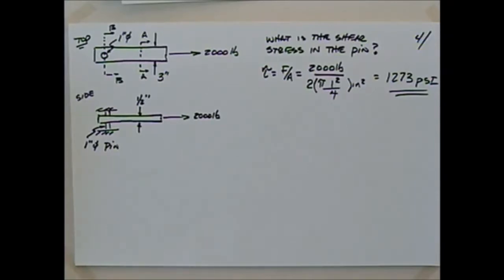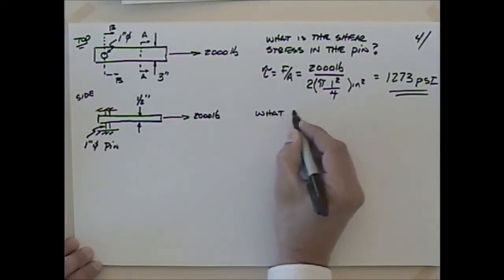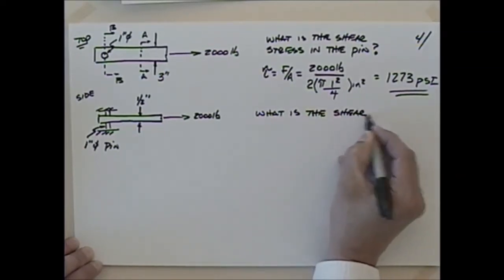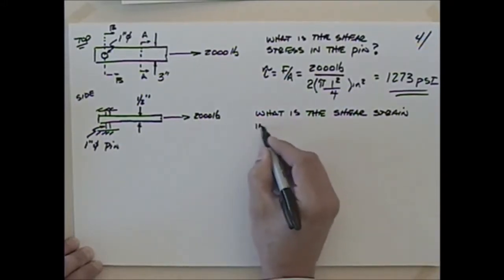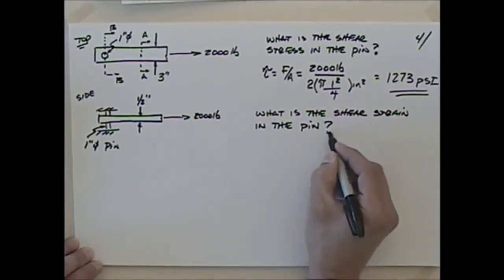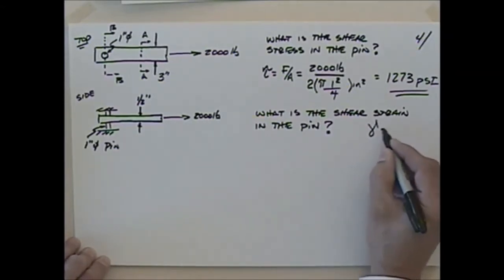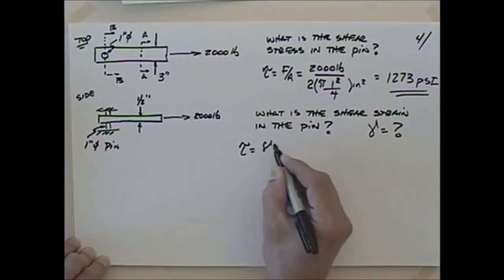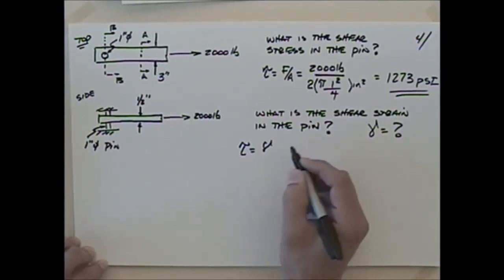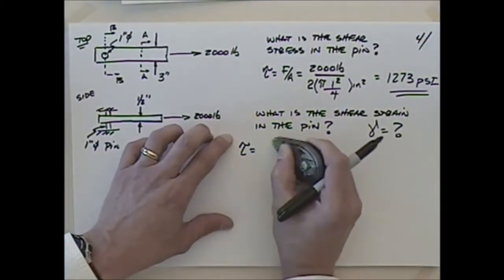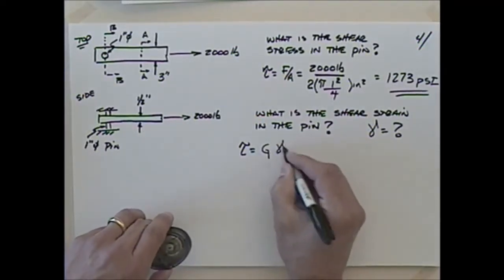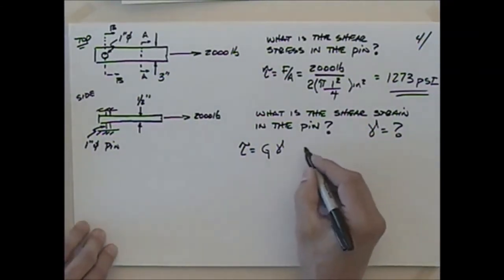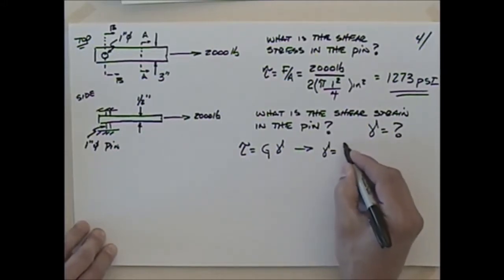We could also ask: what's the shear strain in the pin? Remember gamma is related to shear stress — tau equals G times gamma — so gamma equals tau divided by G. Let's say the pin is steel. G can be calculated as E divided by 2 times the quantity 1 plus Poisson's ratio. Taking E as about 30×10⁶ PSI and Poisson's ratio as 0.3, G turns out to be about 11.8×10⁶ PSI, or 11,800 KSI.